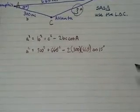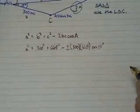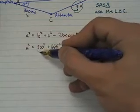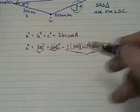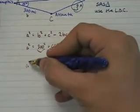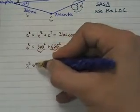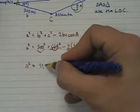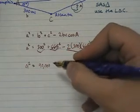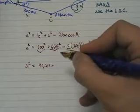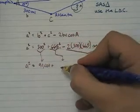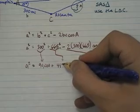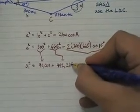Now at this point, I'm going to just plug everything into my calculator. I'm going to plug 300 squared in there, 665 squared, and multiply all of these numbers. So I get A squared equals 300 squared is 90,000.